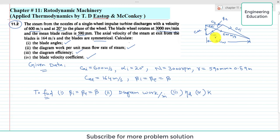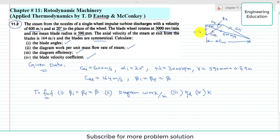To start the solution, we first sketch the velocity triangles. The absolute velocity C_AI is 600 meters per second. C_RI is the relative velocity, C_B is the blade velocity which we will find. Alpha_I is the nozzle angle at 20 degrees. Beta_E is the blade angle at exit. C_RE is the relative velocity with respect to the blade speed, and C_AE is the absolute velocity at exit, given as 164 meters per second.